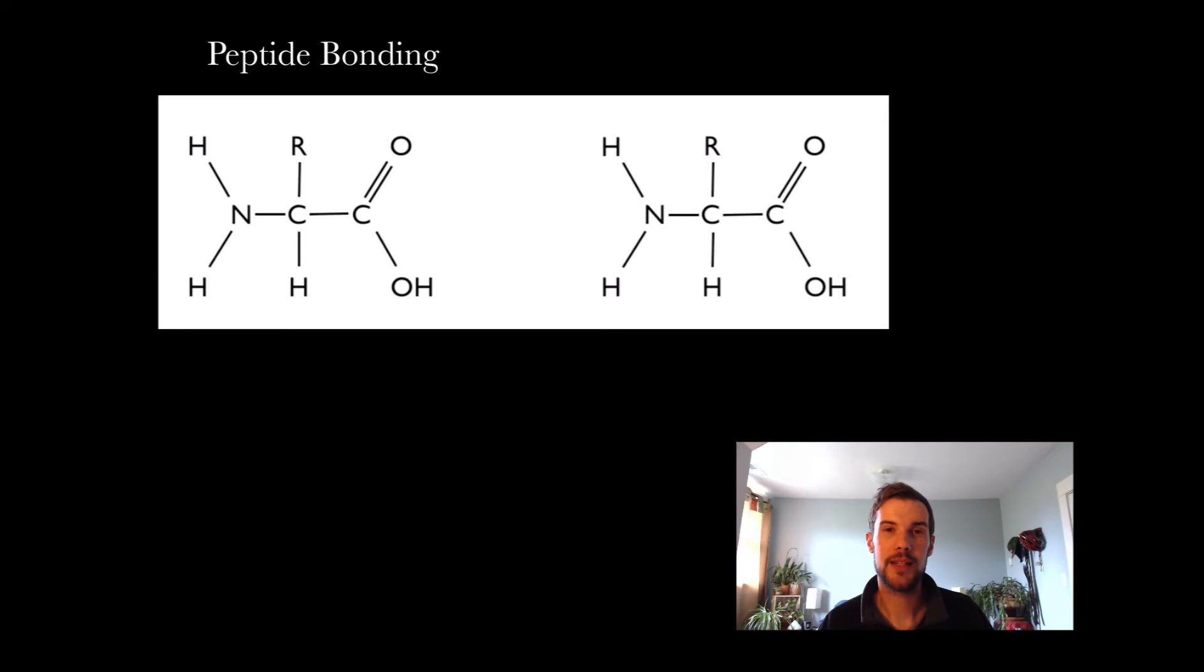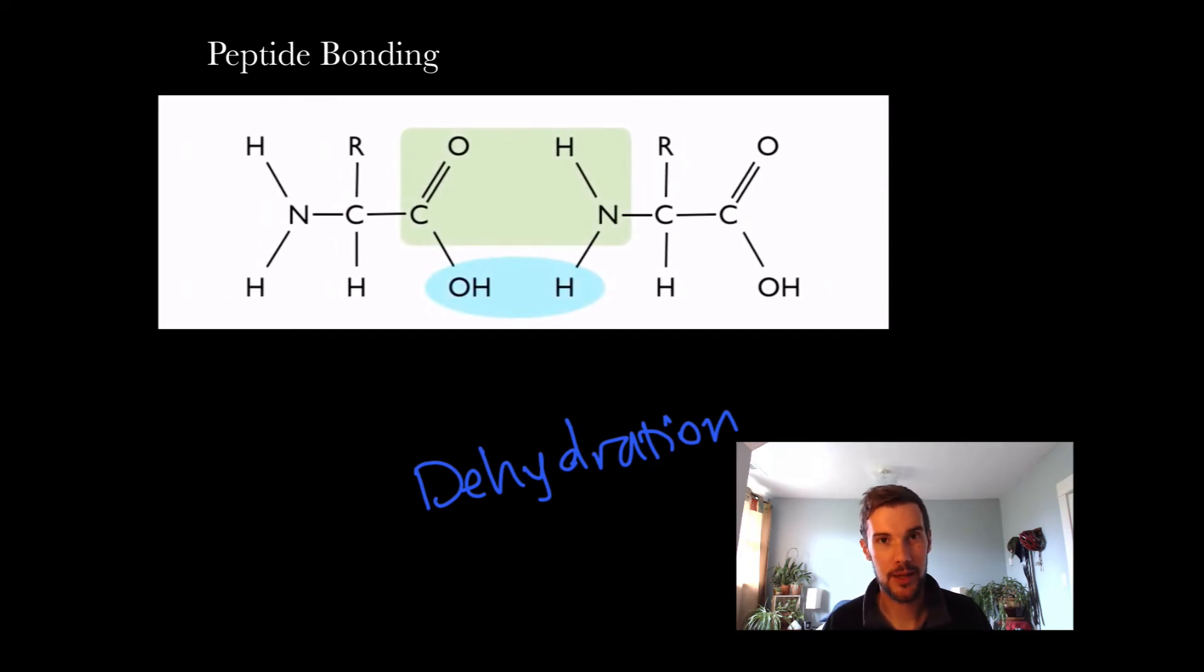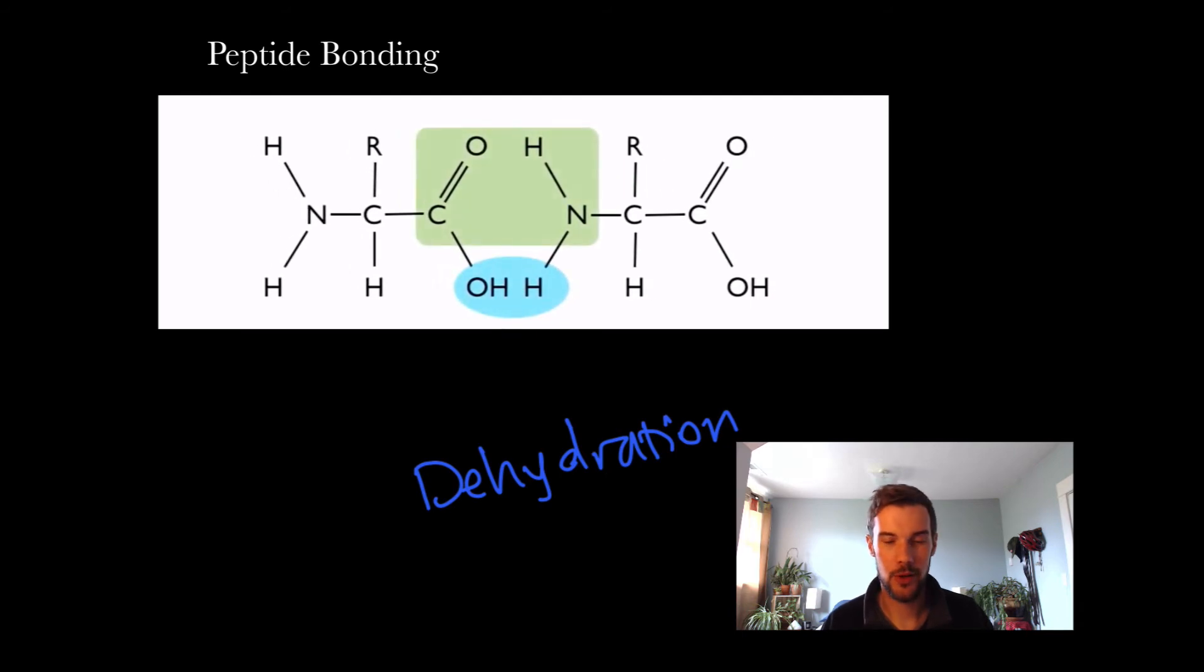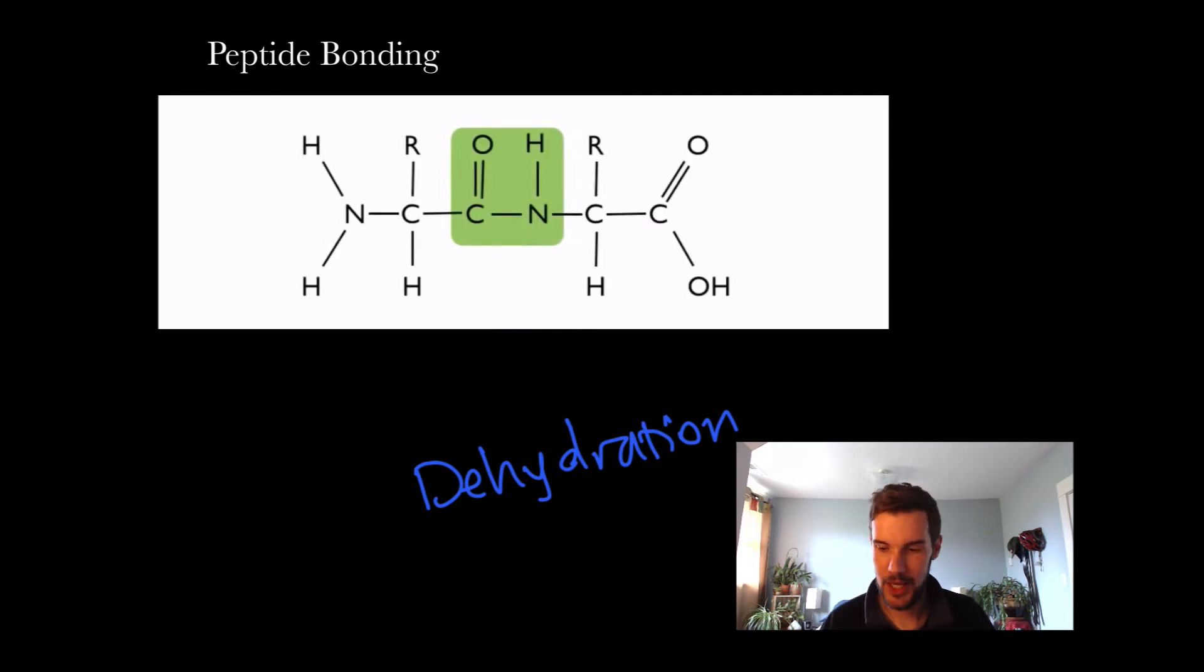When the amino acids come together, they go through dehydration synthesis. The OH group and the hydrogen bond together and they actually leave. In order for water to leave means it's dehydration and then it forms what's called a peptide bond.